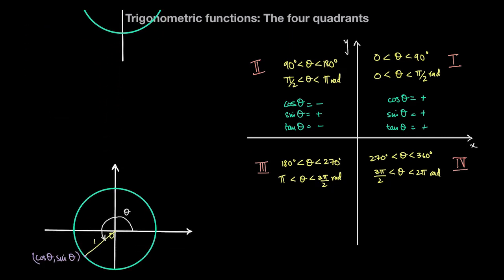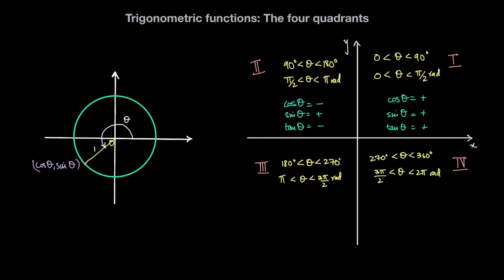If theta is in the third quadrant — an angle between 180 and 270 degrees, or between pi and 3 pi over 2 radians — the x-coordinate is negative and the y-coordinate (sine of theta) is also negative. So cosine of theta is negative, sine of theta is negative, but the tan of theta — which is sine divided by cosine — is a negative number divided by a negative number, giving a positive value.